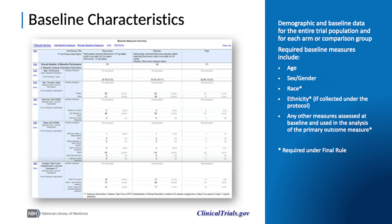The baseline characteristics module provides demographic and baseline data for the entire population of the trial, as well as each arm or comparison group. Age, sex, race, ethnicity, and any measures assessed at baseline that are used in the analysis of the primary outcome measures are required to be included. Examples of each type of measure are shown to the left.